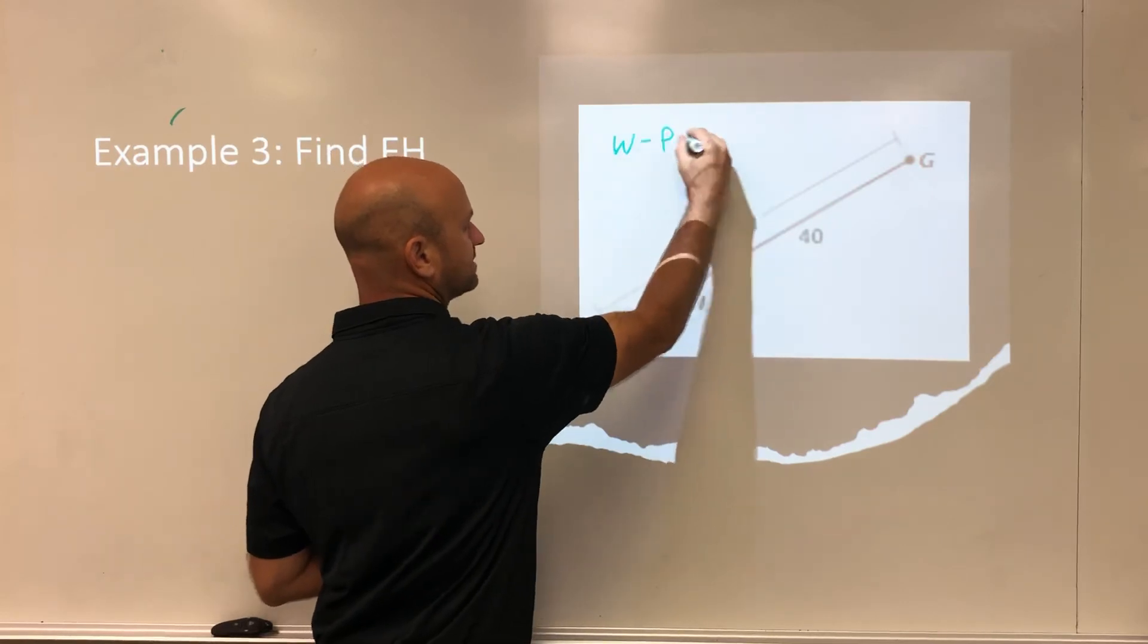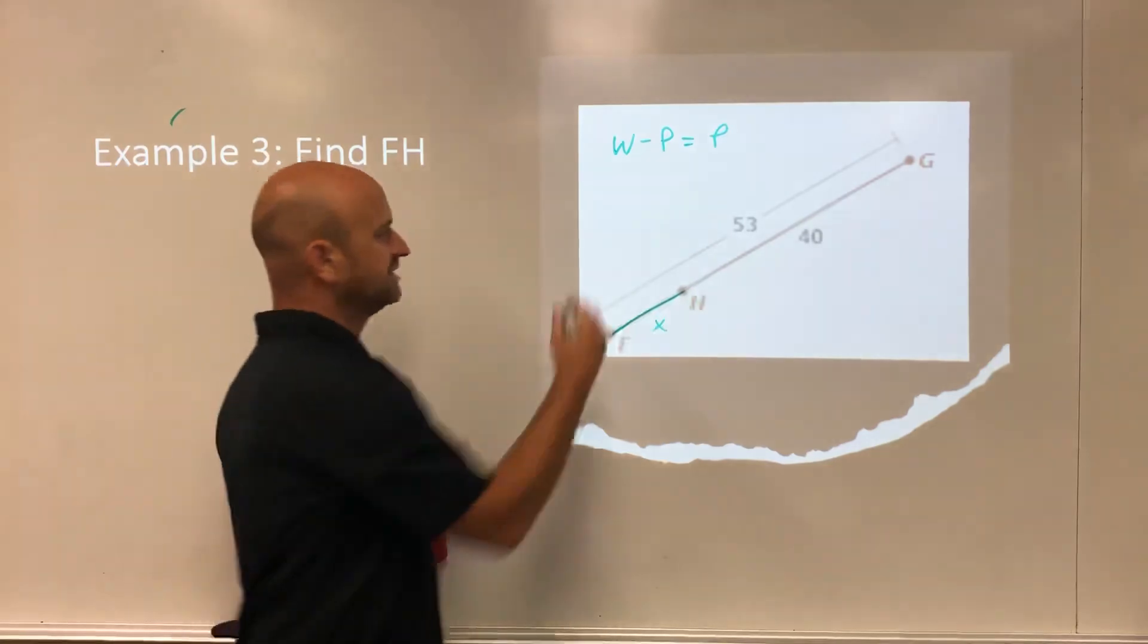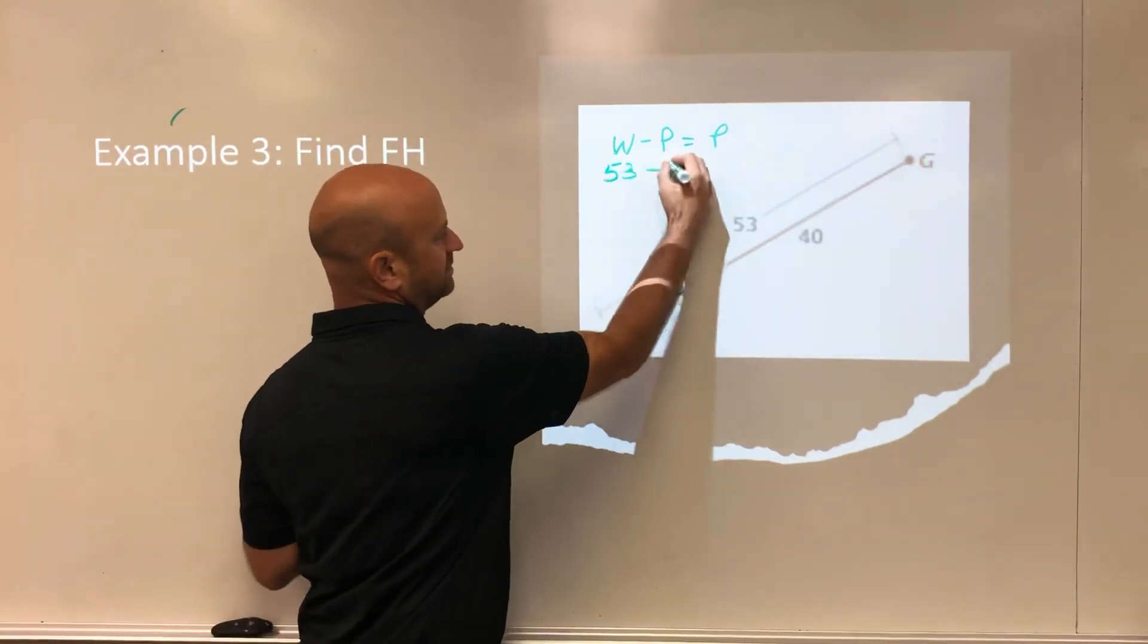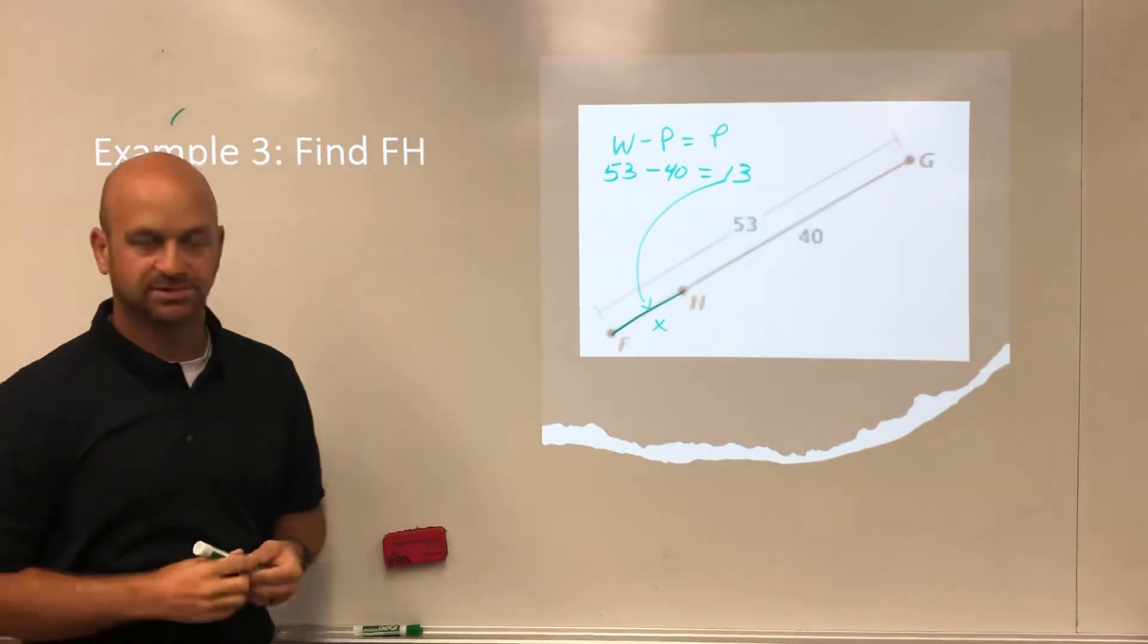So the whole thing in this case is 53 and we subtract 40, and that will give us 13 for our missing part.